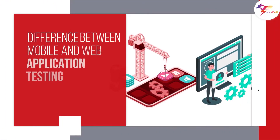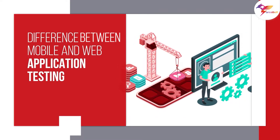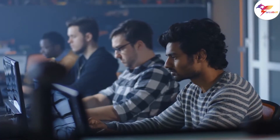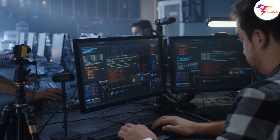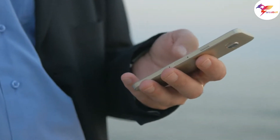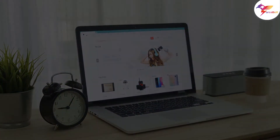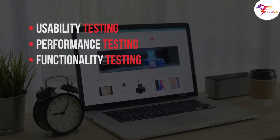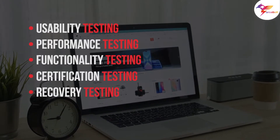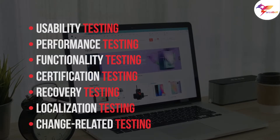When it comes to differences between mobile and web application testing, they are entirely different. However, a developer's main aim is to give an excellent experience. There are some tools commonly used in both mobile and web application testing, such as usability testing, performance testing, functionality testing, certification testing, recovery testing, localization testing, and change-related testing.